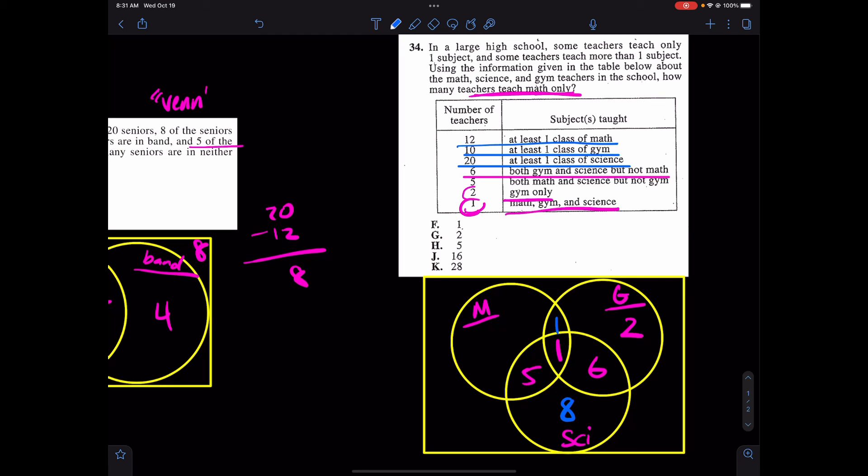From there, the last piece of this is probably going to unravel our puzzle of finding only math. Well, if 12 people are in math total, five, one, one makes seven. This must have been five. Our final answer is H. Five are in math only. Great.